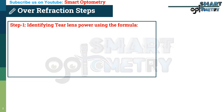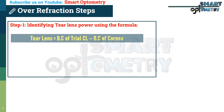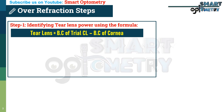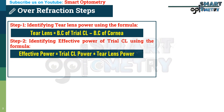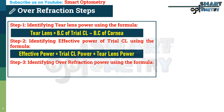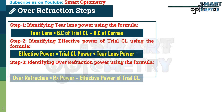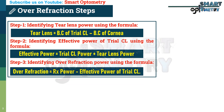Step 1: Identifying tear lens power using the formula — tear lens equals base curve of trial contact lens minus base curve of cornea. Step 2: Identifying effective power of trial contact lens using the formula — effective power equals trial contact lens power plus tear lens power. Step 3: Identifying over-refraction power using the formula — over-refraction equals prescription power minus effective power of trial contact lens.